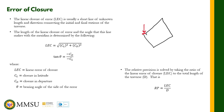This is the linear error of closure. The distance of this very small line is equal to the square root of CL squared plus CD squared. CL is the closure in latitude — basically the difference of the north and south latitude. This is the correction in latitude.